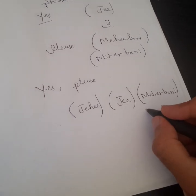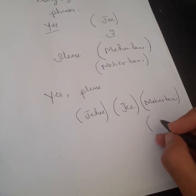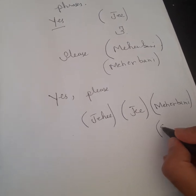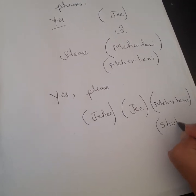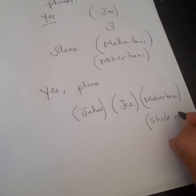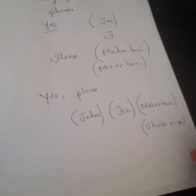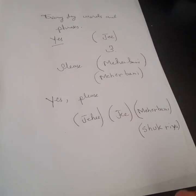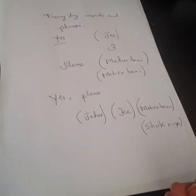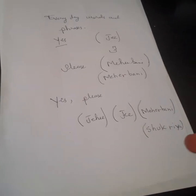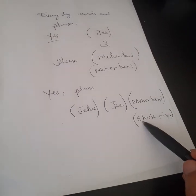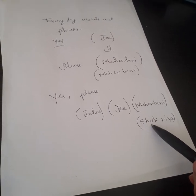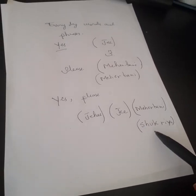Or sometimes you can use the alternate word, which is called 'Shukriya', S-H-U-K-R-I-Y-A. Some of these words in Urdu might be very cohesive and transparent and they might relate to other languages as well — like in Arabic we say 'Shukran'. So in Urdu we say 'Shukriya', they say 'Shukran'.